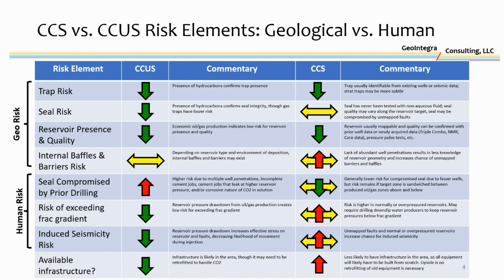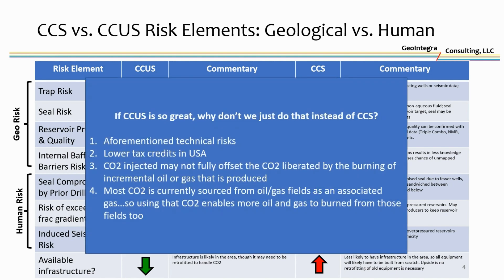Lastly — and this isn't necessarily a risk, it's just a consideration — is the available infrastructure in the area. Generally speaking, with CCUS fields there's a lot of infrastructure and know-how at the surface. Whereas with CCS, that's not necessarily always the case. Many areas now being looked at for CCS potential — particularly in the Midwest and Western United States — don't really have infrastructure nearby, so that's all going to have to be built from scratch. So there are pros and cons for both.